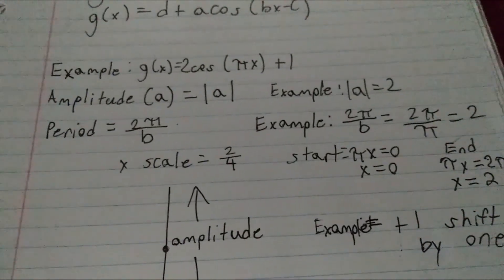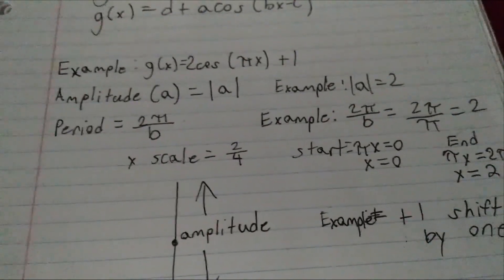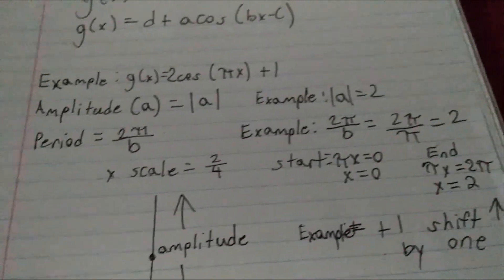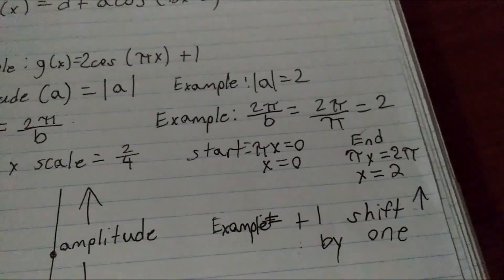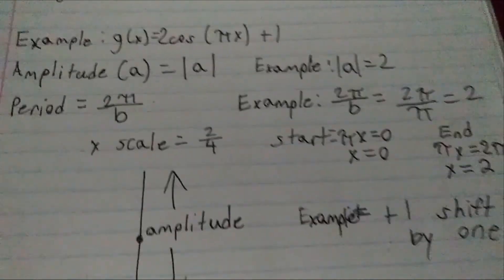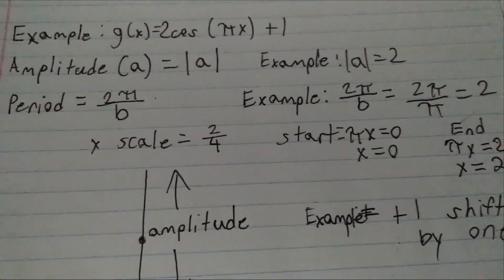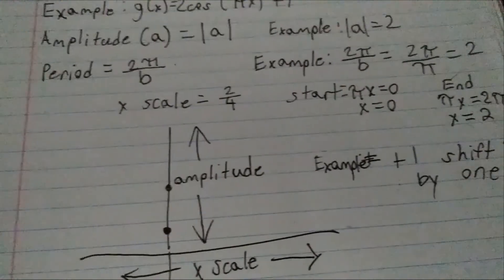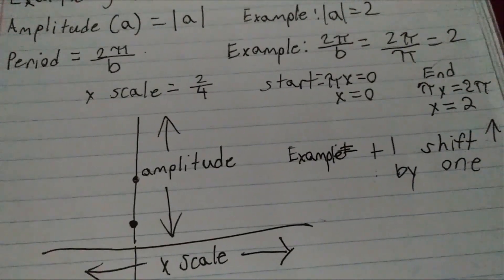A period, whenever we use it, is 2 pi over b. So, as an example, 2 pi over b is going to be 2 pi over pi, which equals 2. On a scale, we're going to take that 2 and divide it by 4, and that will give us our x scale, or our distance between critical points.